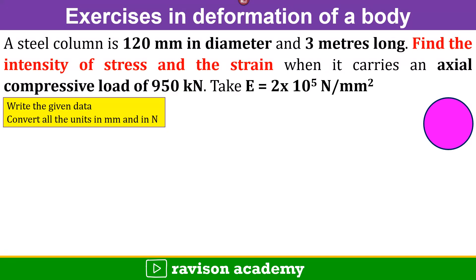Steel column 120 mm in diameter, so it's represented as a circular section, and the length of the circular section is given as 3 meters.